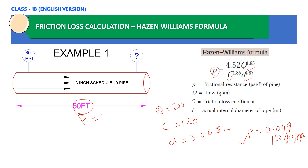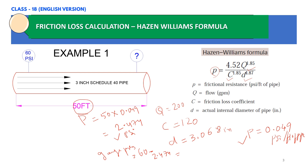The actual friction loss for the complete 50 feet of pipe is 50 multiplied by 0.049, which gives 2.474 PSI. The gauge pressure at the end will be the initial pressure of 60 PSI minus the friction loss of 2.474 PSI, giving a pressure gauge reading of 57.526 PSI.